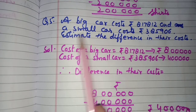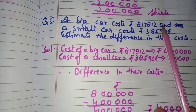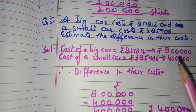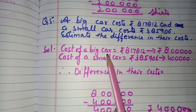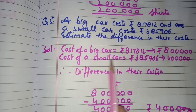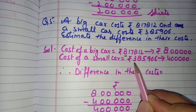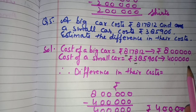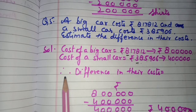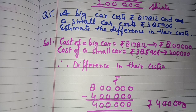Question number 5: A big car costs rupees 8,17,812 and a small car costs rupees 3,85,906. Estimate the difference in their costs. Rounding off both to the nearest lakh: the big car rounds to 8 lakh and the small car rounds to 4 lakh. Difference: 8 lakh minus 4 lakh = 4 lakh. There is an estimated difference of rupees 4 lakh between the costs.